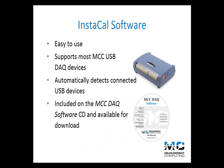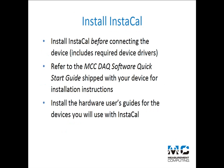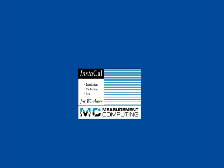Instacal automatically detects installed USB devices. Install Instacal from the MCC DAC software installation CD included with your device, and follow the instructions in the printed quick start guide to install the software. Install the hardware user's guide for your device as part of the software installation. After you install Instacal and connect your MCC USB DAC device, you can launch Instacal.